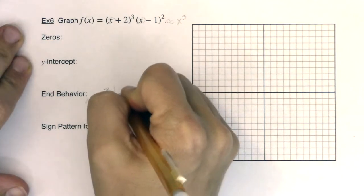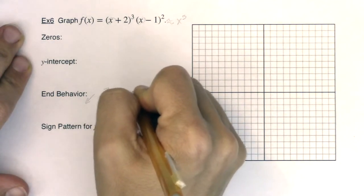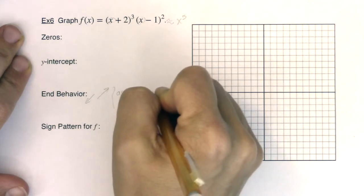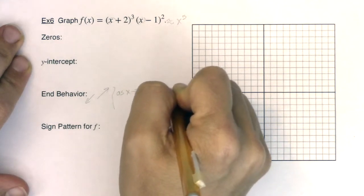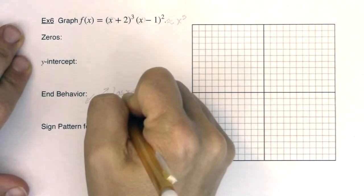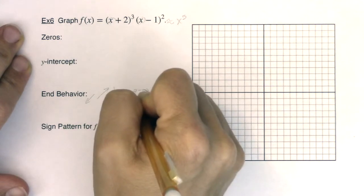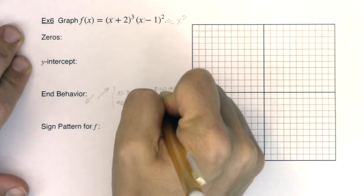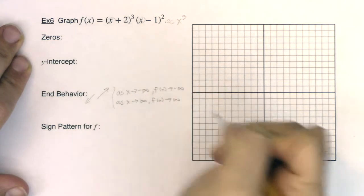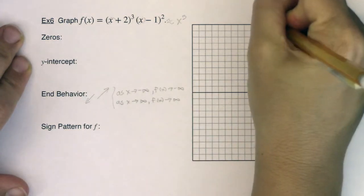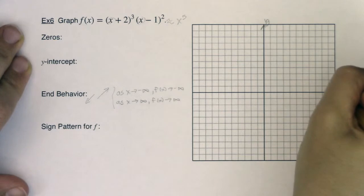Or if you wanted to write it up with sort of calculus notation, you would say as x heads left, f of x heads down, and you could say as x heads right, f of x heads up. So let me go ahead. I'm going to just label my axes right now.